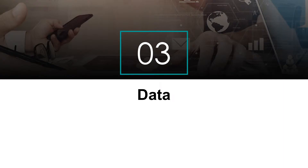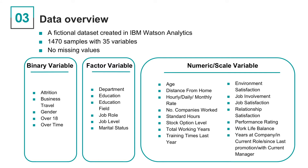Now let's see how we get the results above. We use the fictional dataset created by IBM Data Scientists. It contains over 1,000 samples with 35 variables. Among all of them, we have five binary variables, and we are going to use attrition as our dependent variable — in other words, the label of our dataset. We also have 23 numerical variables and six factor variables. Since it is a fictional dataset, we do not have any missing values, which makes future analysis straightforward.